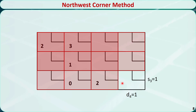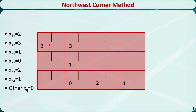We have only one cell left. We allocate the remaining amount, which is 1, to this cell and cross out this row and this column, removing S3 and D4. This is the final tableau. Remember, this is just a basic feasible solution — it is not the final optimal solution to the balanced transportation problem yet. This means x1,1 equals 2, x1,2 equals 3, and so on. All other xij in the blank cells are equal to 0.